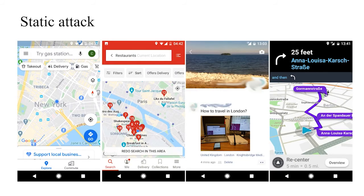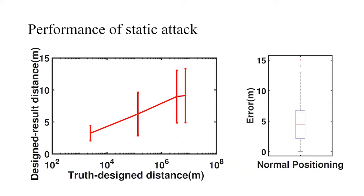In static attack, we can successfully change the smartphone location result to different cities in different apps, as we can see in this figure. Now we check the performance of static attack. The designed result distance shown in the left figure has a range from 2 meters to 13 meters, which is actually in the range of normal positioning error shown in the right figure.